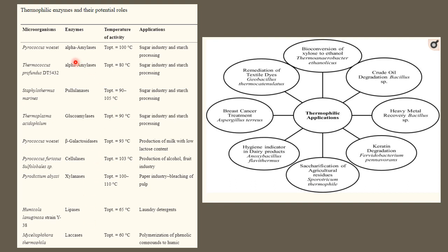Some examples of enzymes extracted from thermophilic organisms and their optimum temperatures and applications: try to remember four or five examples from a viva point of view. Applications include breast cancer treatment using Aspergillus terreus, remediation of textile dyes using Geobacillus thermocat and related species, crude oil degradation using Bacillus species, and heavy metal recovery also using Bacillus species.